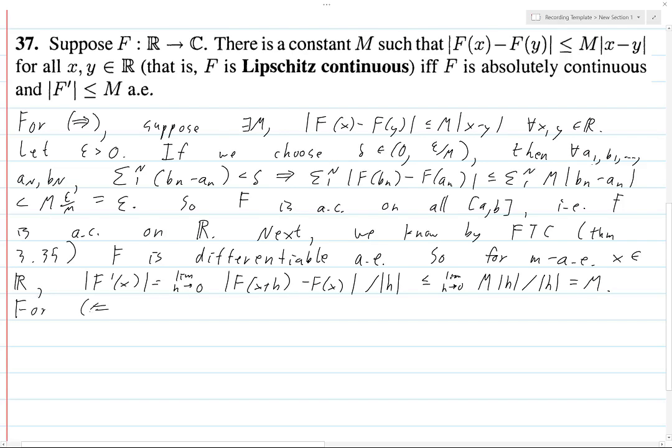So now we do the reverse direction. For the reverse, suppose F is absolutely continuous in R, and there exists an M such that |F'| ≤ M almost everywhere.